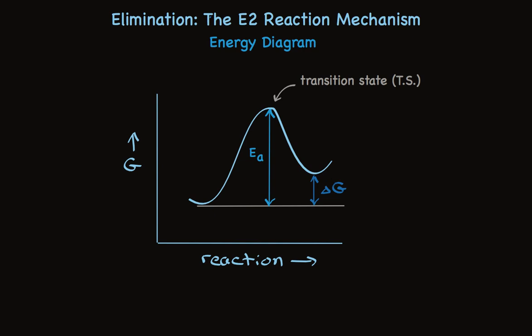This all makes sense and brings up some interesting questions. We need to take a look at this mechanism and what it tells us about the regioselectivity of the reaction. When we can lose a hydrogen on either side of the halide, we can make different alkenes. Generally, this reaction is regioselective, and we need to talk about the factors that affect that selectivity.